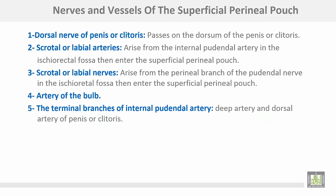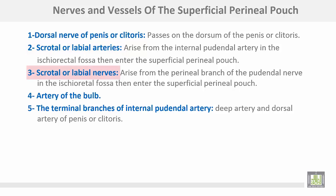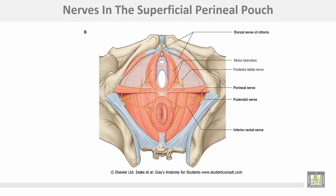The nerves and vessels of the superficial perineal pouch include the dorsal nerve of the penis or clitoris, which runs on the dorsum of the penis or clitoris. Scrotal or labial arteries arise from the internal perineal artery in the ischioanal fossa, then enter the superficial perineal pouch. Scrotal or labial nerves arise from the perineal branch of the pudendal nerve in the ischioanal fossa and also enter the pouch. The artery of the bulb and the terminal branches of the internal pudendal artery — the deep artery and dorsal artery of the penis or clitoris — are also present.